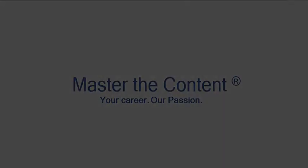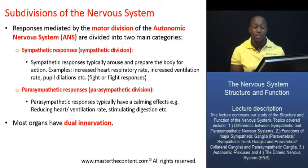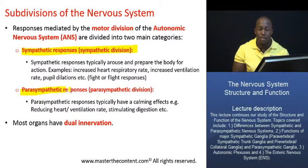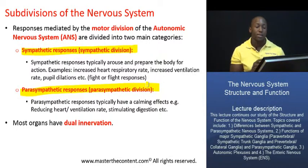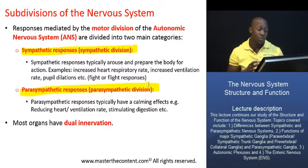Your career, our passion. On this slide we are going to further divide the ANS, the autonomic nervous system, into two main categories, two main divisions. We're going to divide it into the sympathetic division, or the division that mediates sympathetic responses, and we are also going to divide it into the parasympathetic division. These are the two main divisions of the ANS, of the motor division of the ANS.